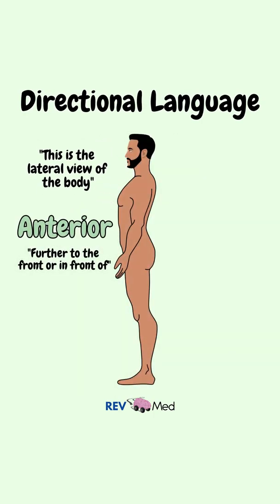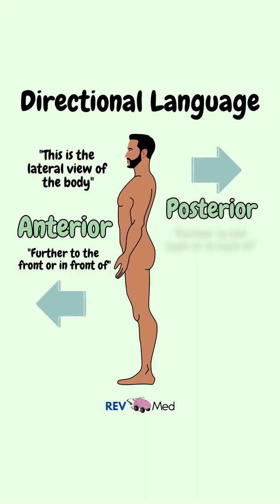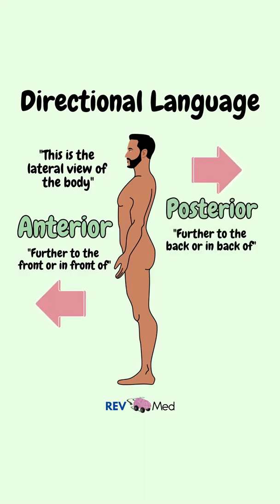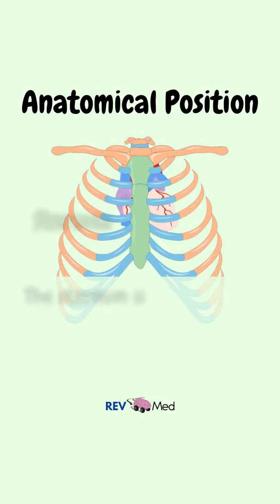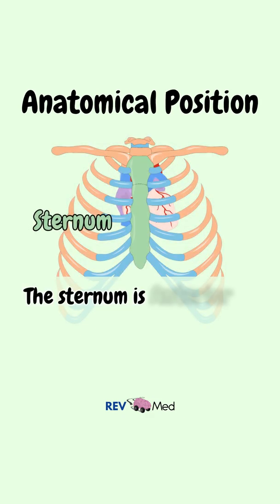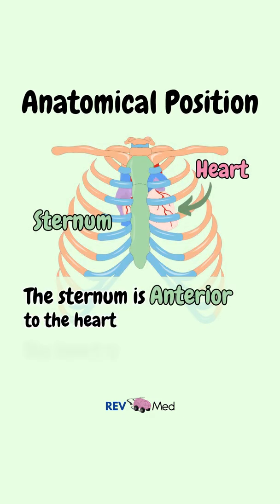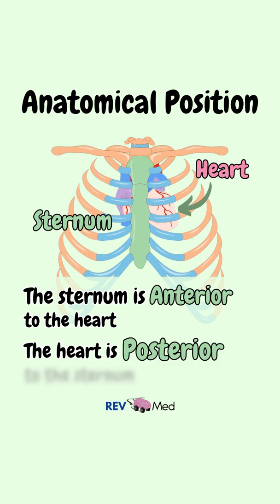Now for the terms anterior and posterior. Anterior means further to the front, or in front of. Posterior means further to the back, or in the back of. So we could say that the sternum is anterior to the heart, or the heart is posterior to the sternum.